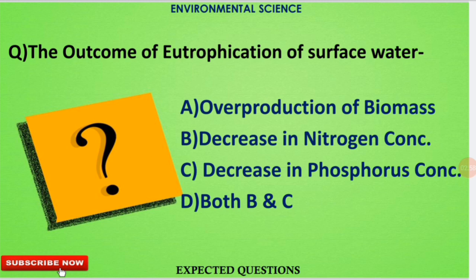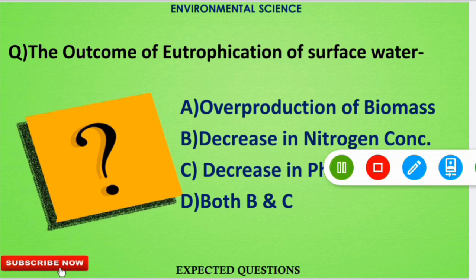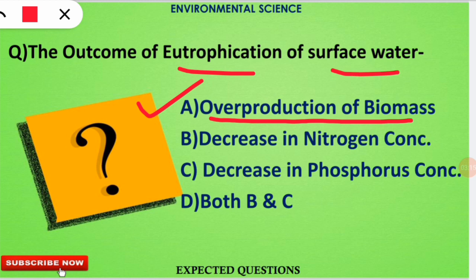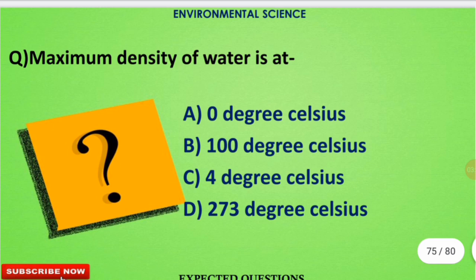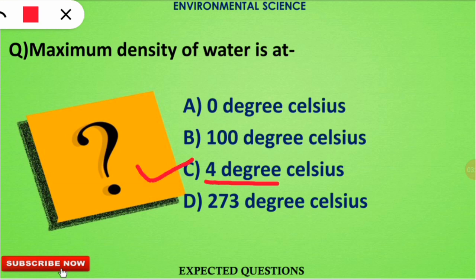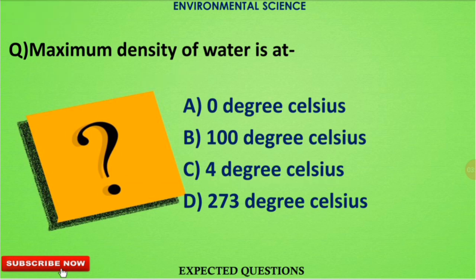The next question is: the outcome of eutrophication of surface water is what? The correct answer is option A — overproduction of biomass is the outcome of eutrophication in surface water. The next question is: the maximum density of water is at what temperature? The correct option is option C — at 4 degrees Celsius, the density of water is maximum.